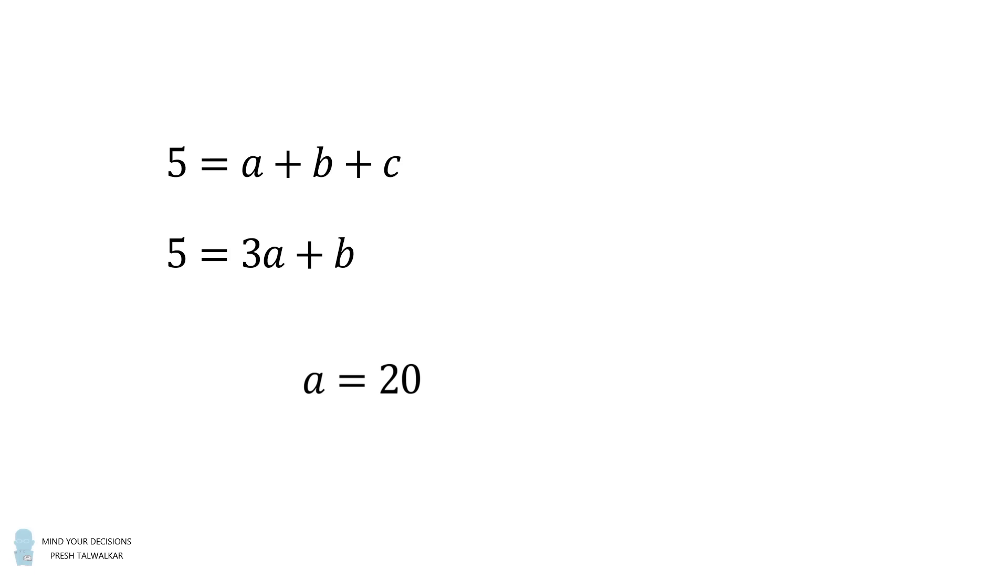From here we can go to the following equation and substitute in a = 20. This means 5 = 60 + b, which means b = -55. Then we have 5 = a + b + c. We'll substitute for a and b and we can solve that c = 40. So we put this all together, we've solved for a, b, and c.